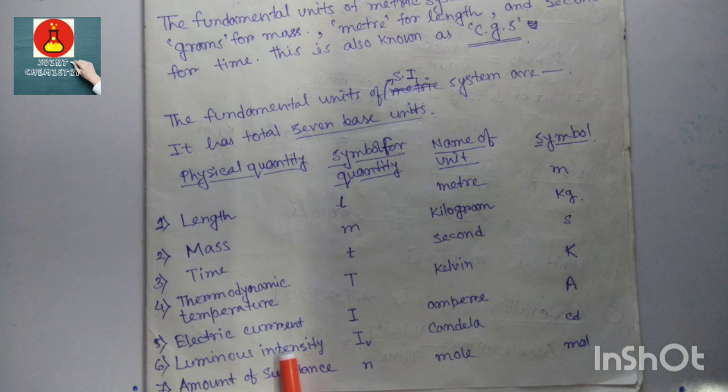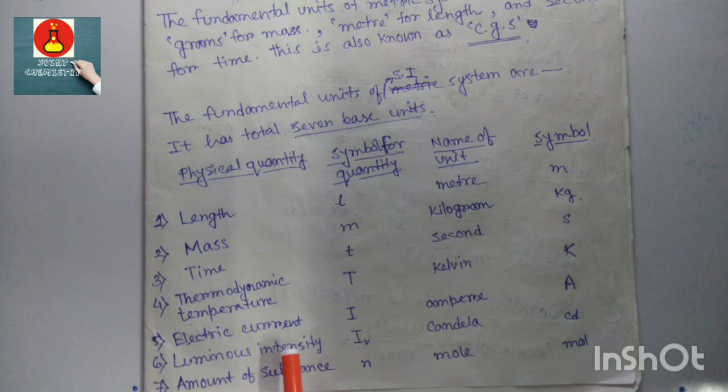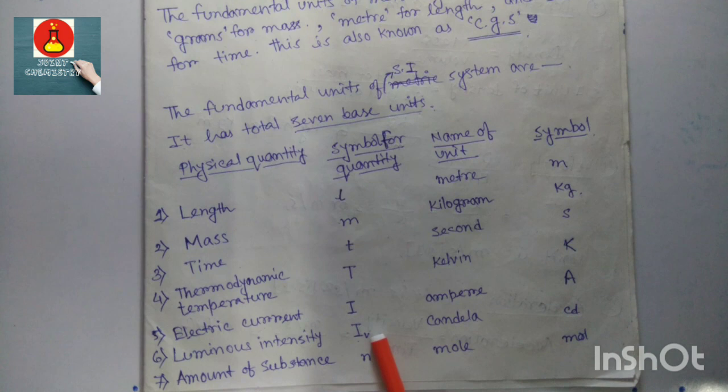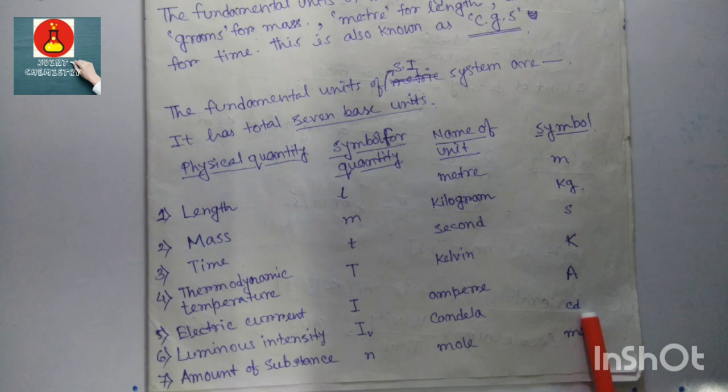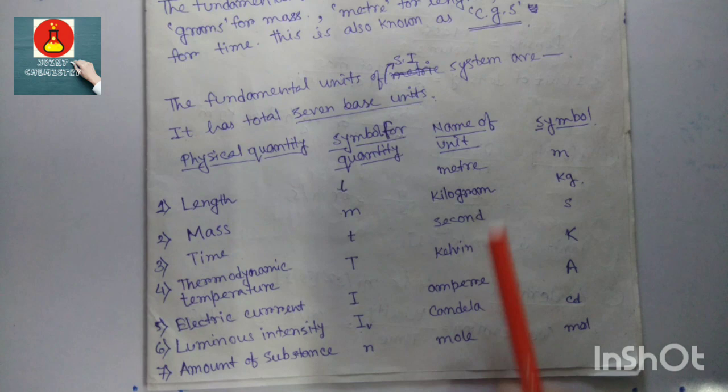Luminous intensity — any radiative monochromatic light intensity — is called luminous intensity, with symbol I subscript v, unit candela, and symbol cd. The amount of substance has symbol small n and unit mol.